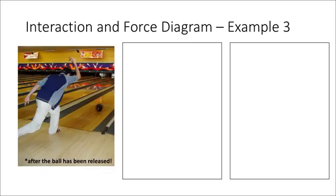In this example, I have someone bowling and they've thrown a bowling ball down the alley. It's important to note that we're looking at the situation after they've released the ball, so they are no longer touching the ball. What would the interaction diagram look like for this scenario? I'll begin by listing all the objects in my system: I know I have the person, the bowling ball, the ground or the floor in this case, and the earth.